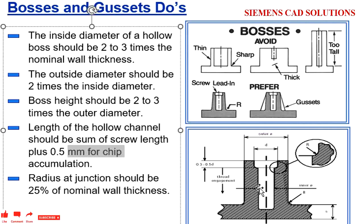The radius at the junction should be 25% of the nominal thickness. So here, a radius of 25% of your nominal thickness should be added at the junction.